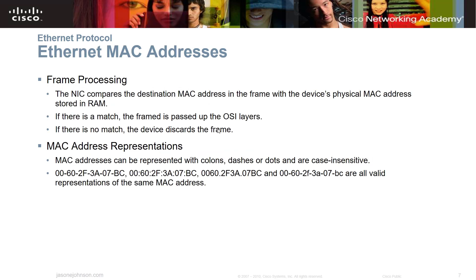When frames are processed, the NIC card compares the destination MAC address in the frame with the device's physical MAC address stored in RAM. If there's a match, the frame is passed up the OSI layers. If it doesn't match, the frame is discarded. The NIC reads all the way up to the destination MAC, then discards the rest, but it does read all frames that come across the local area network.